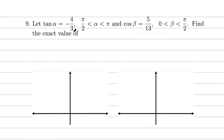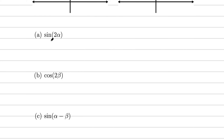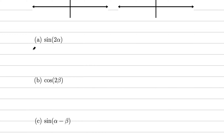Given: tan α = -4/3 where α is in the second quadrant (90° < α < 180°), and cos β = 5/13 where β is in the first quadrant. We need to find the exact values of several sine and cosine expressions. For sin 2α, the double angle formula gives us 2·sin α·cos α.